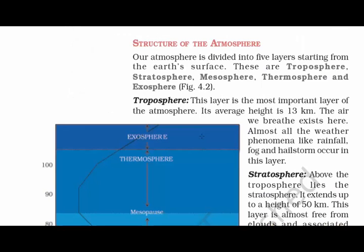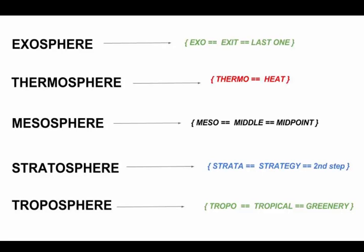Now let's talk about the structure of the atmosphere. Our atmosphere is divided into five layers. I have made a small picture to help remember what the five layers are. The first layer is the troposphere — remember 'tropo' equals tropical, associated with greenery. Then the stratosphere — compare 'strata' with strategy, always remember strategy is the second step. Then comes the mesosphere — 'meso' means middle, so it is the midpoint. Then the thermosphere — 'thermo' equals heat, and it is very hot there. And the last one is the exosphere — 'exo' means exit, so the last one is the exit.